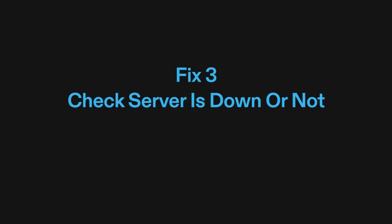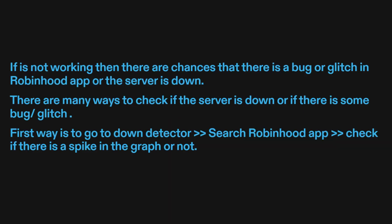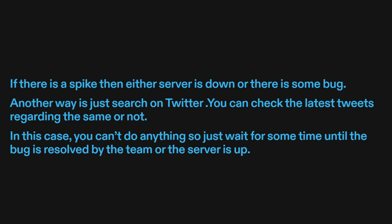Fix three: check if the server is down or not. If it's not working, then there are chances that there is a bug or glitch in the Robinhood app or the server is down. There are many ways to check this. First, go to Down Detector, search Robinhood app, and check if there is a spike in the graph. If there is a spike, then either the server is down or there is some bug.